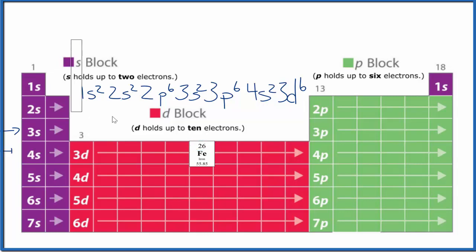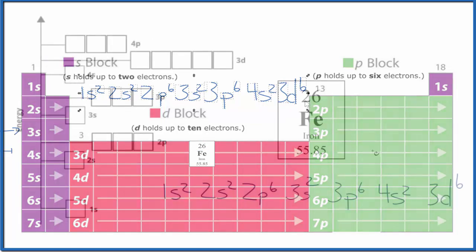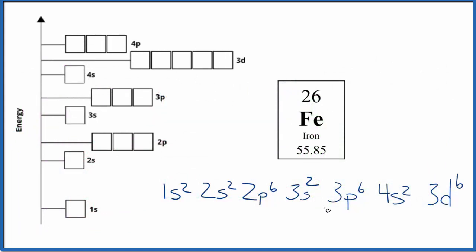Now let's use this to write the atomic orbital diagram for iron. Both of these notations show where the electrons are around the iron nucleus. You could think of the nucleus as right here, and then we have these energy levels around it, kind of like shells.